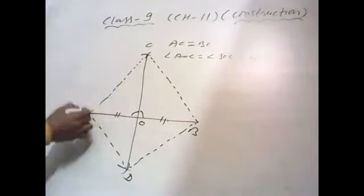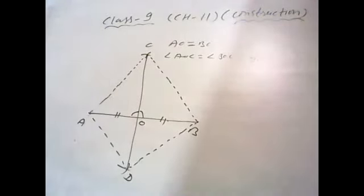So look, AC and BC are equal by construction, arc of the same radius, right? And OC OC common. But the third part, we don't have a third part here. We need three corresponding parts to prove any two triangles congruent, but here we have only two.